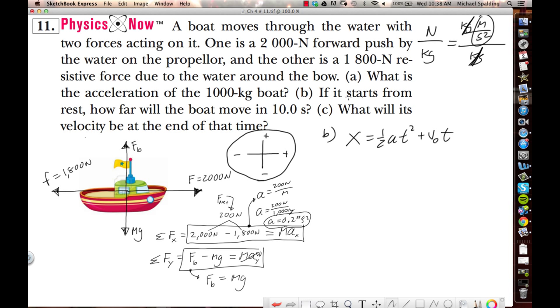It says right here, if it starts from rest, so what's V initial? Zero. So, X is 1 half, the acceleration is 0.2, and what do they say, 10 seconds. So, that's going to be 100, that's going to be 20, 10 meters. Did I do that right? Yeah. 100 times 20, yeah.